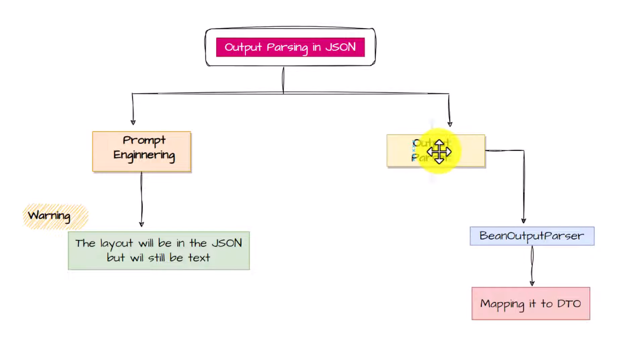The second option is the output parser. Spring AI comes with the output parser, and it includes the BeanOutputParser which will help you map the output in the true JSON format.